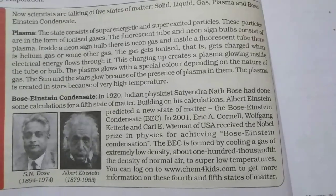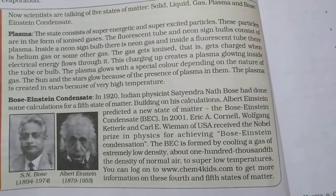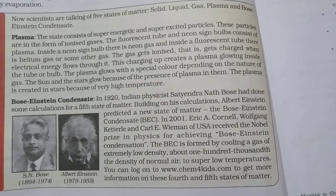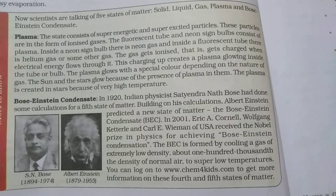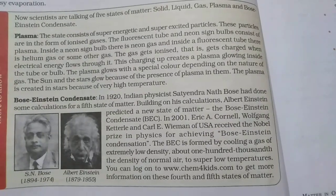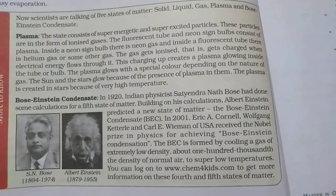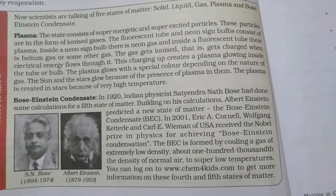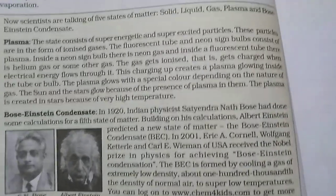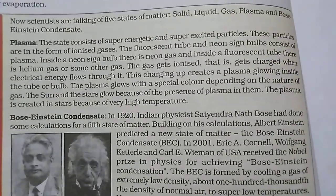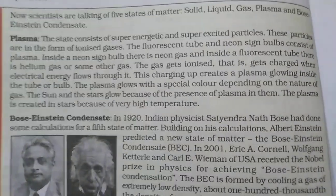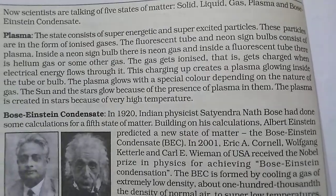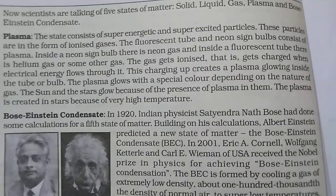When electricity is passed through these tubes, the gases present in them get ionized and form plasma. That means if you ionize any gas, it produces a very bright light or shine, which is known as plasma.